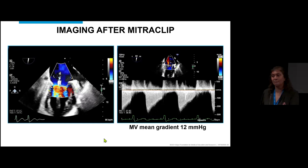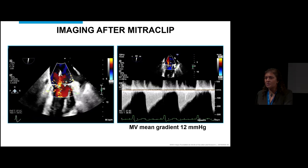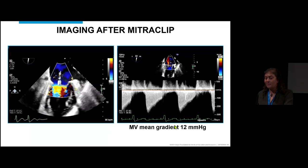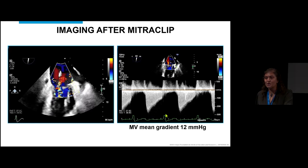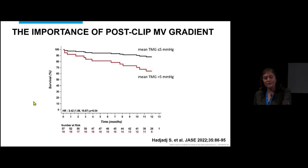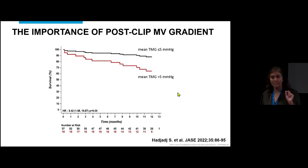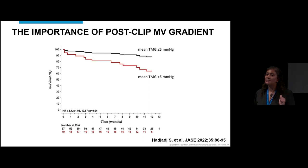However, the gradient was 12 mmHg. The clip couldn't be left in place — repositioning it wouldn't have fixed the MR. You cannot exchange severe MR for severe MS. A recent study published in JACE showed that a post-procedure mitral gradient greater than 5 mmHg impacts survival. The key predictor of post-procedural high gradient was the pre-procedural valve area by 3D — not 2D parameters and not the pre-procedural gradient. Indexing mitral valve area to body surface area or stroke volume also appeared beneficial.